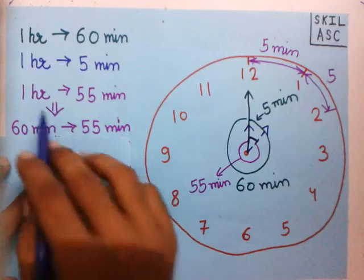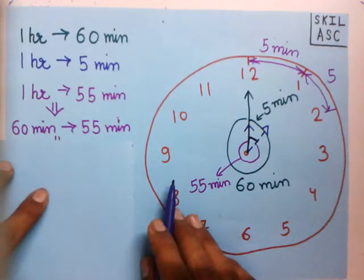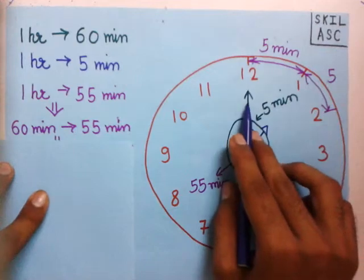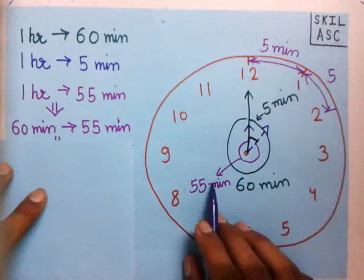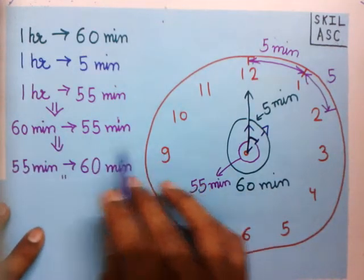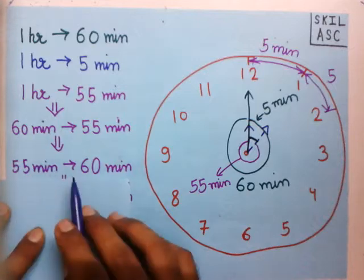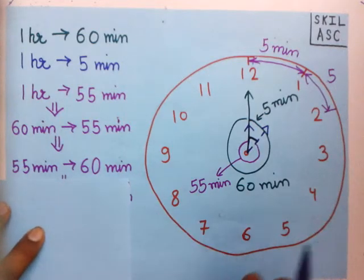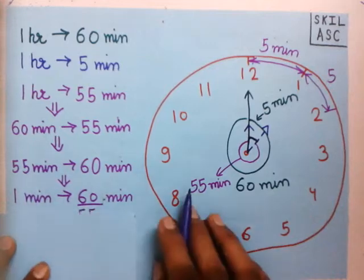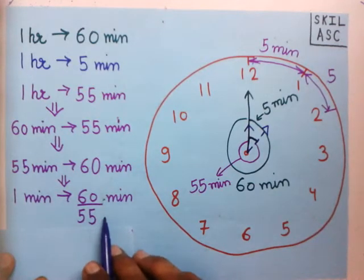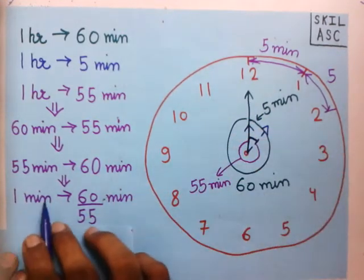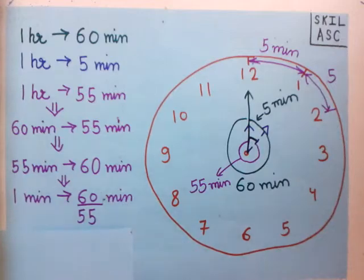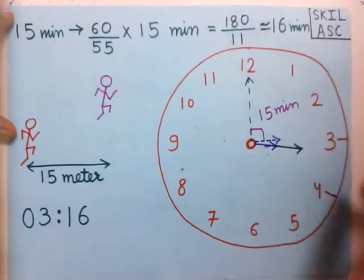One hour is 60 minutes, so in 60 minutes the minute hand gains 55 minutes over the hour hand. We can also say 55 minutes are gained in 60 minutes, so one minute is gained in 60/55 minutes. The minute hand gains one minute in 60/55 minutes.